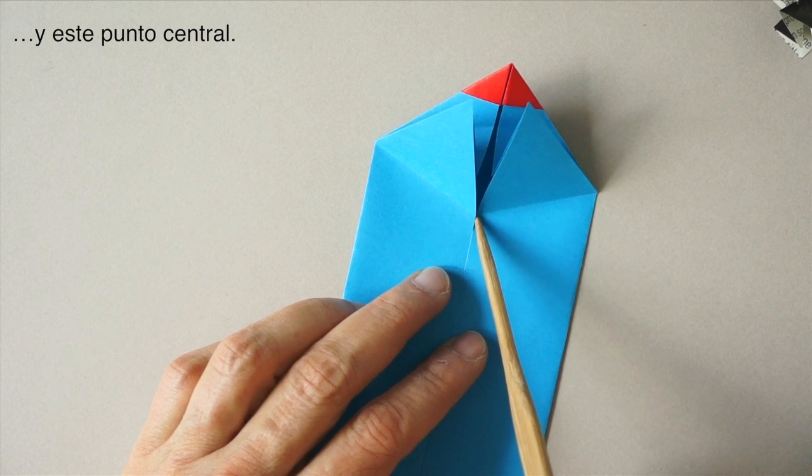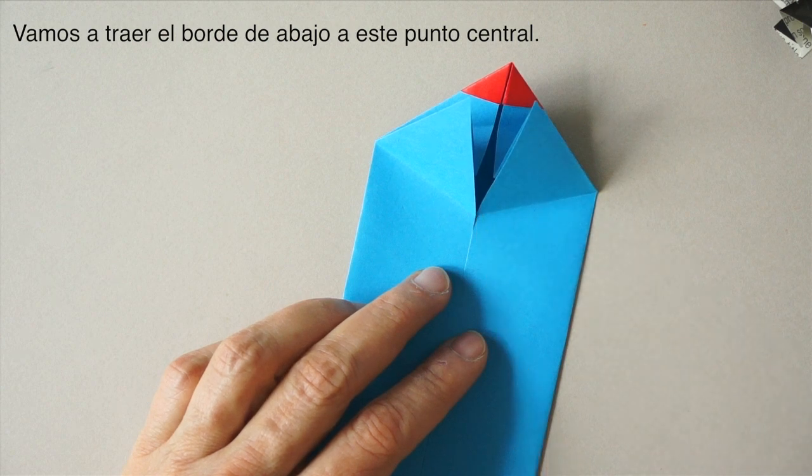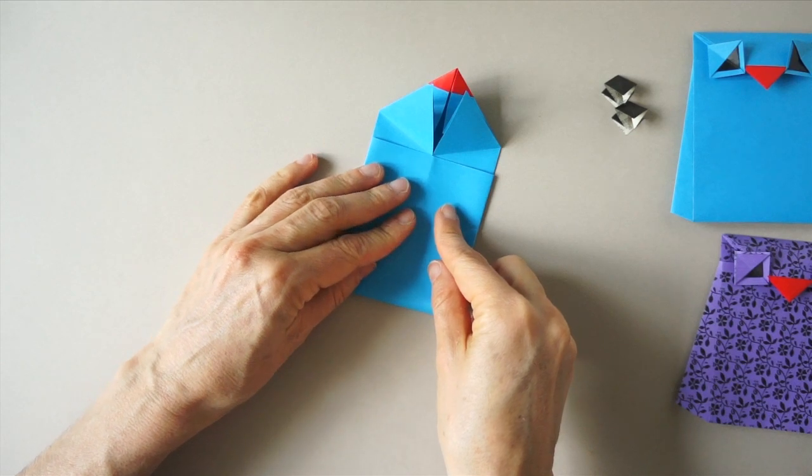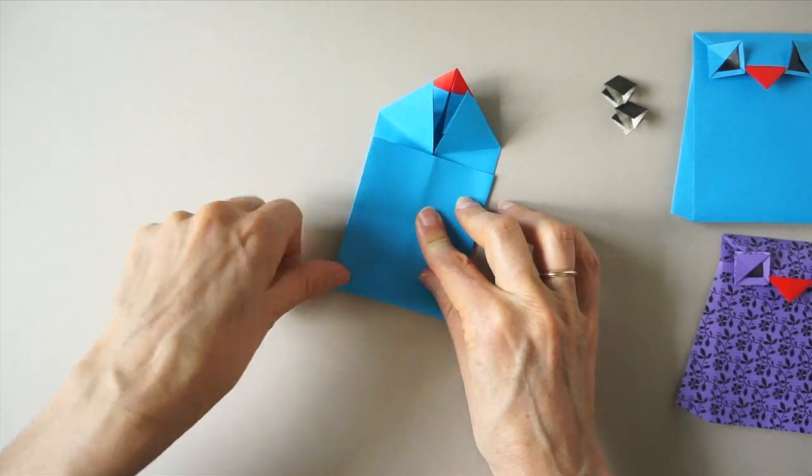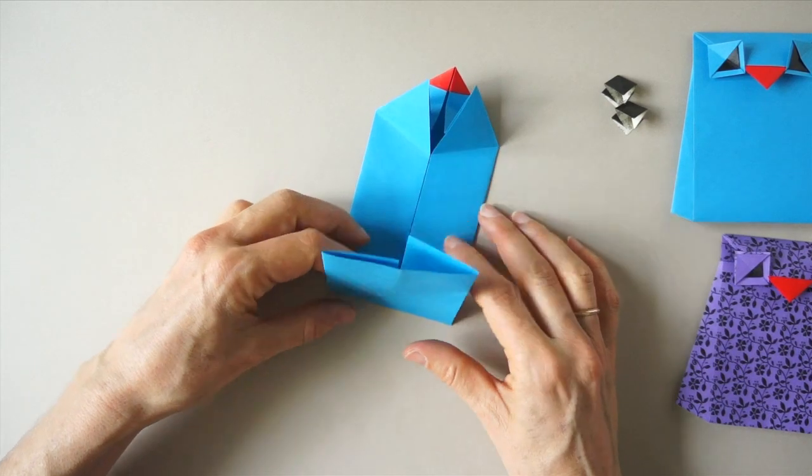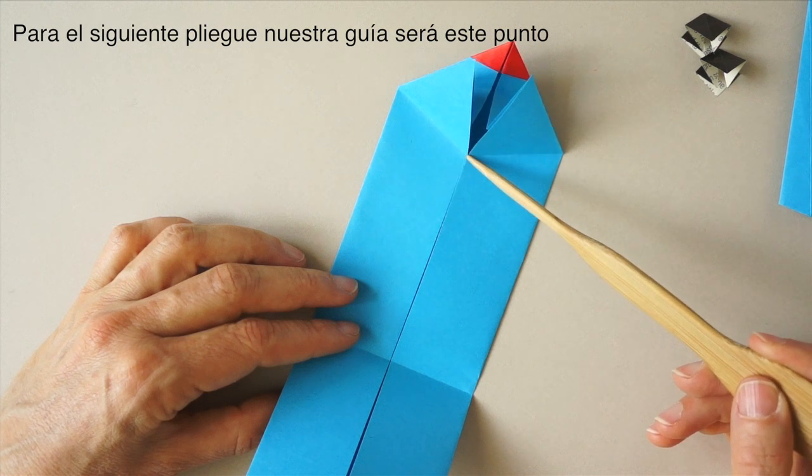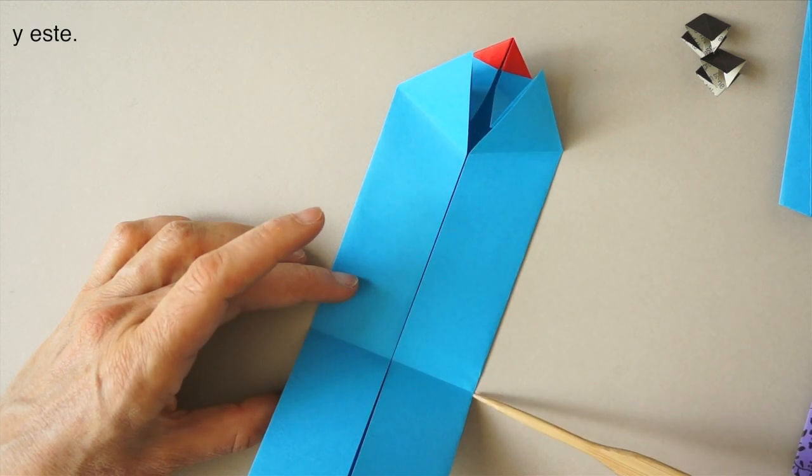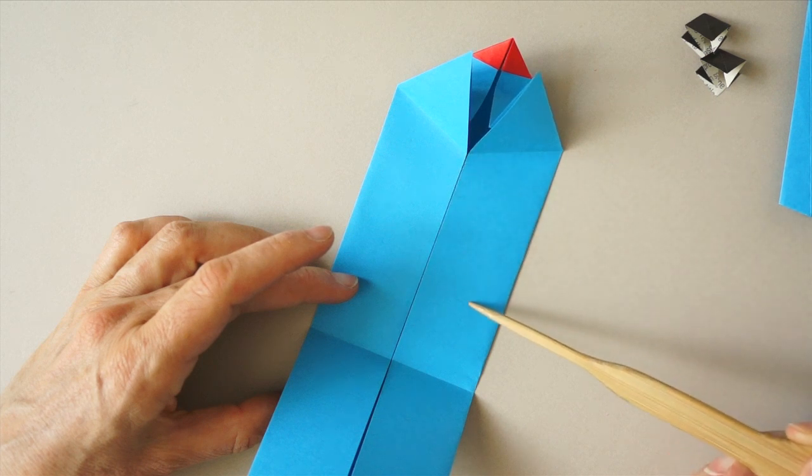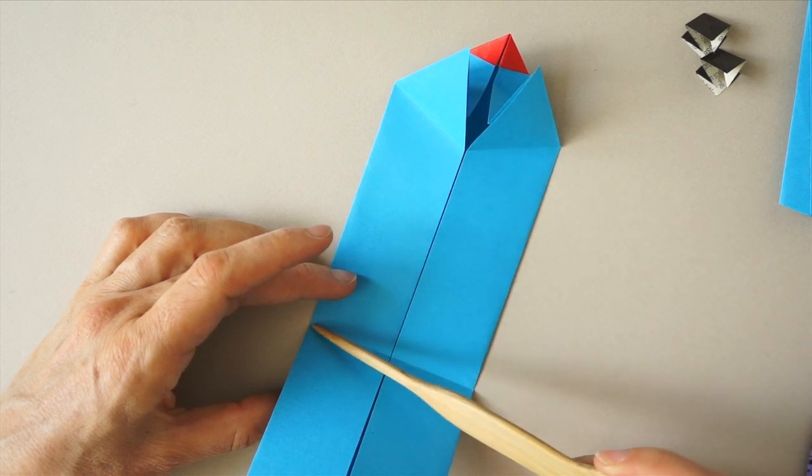Now we are going to be bringing the lower edge so that it aligns with that point. For the next fold, our guidelines will be this point and this point. We are going to fold from there to here.